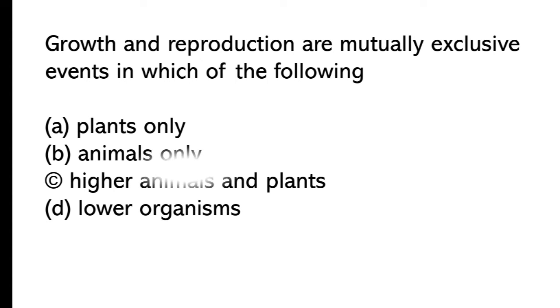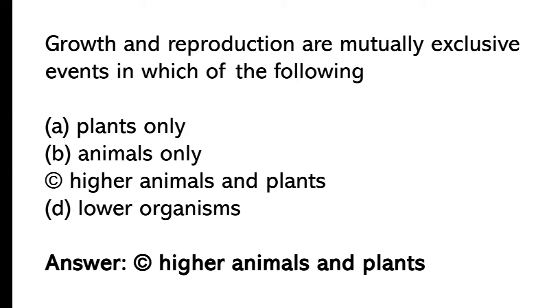Growth and reproduction are mutually exclusive events in which of the following? Plants only, animals only, higher animals and plants, lower organisms. So the correct answer is option C, higher animals and plants.